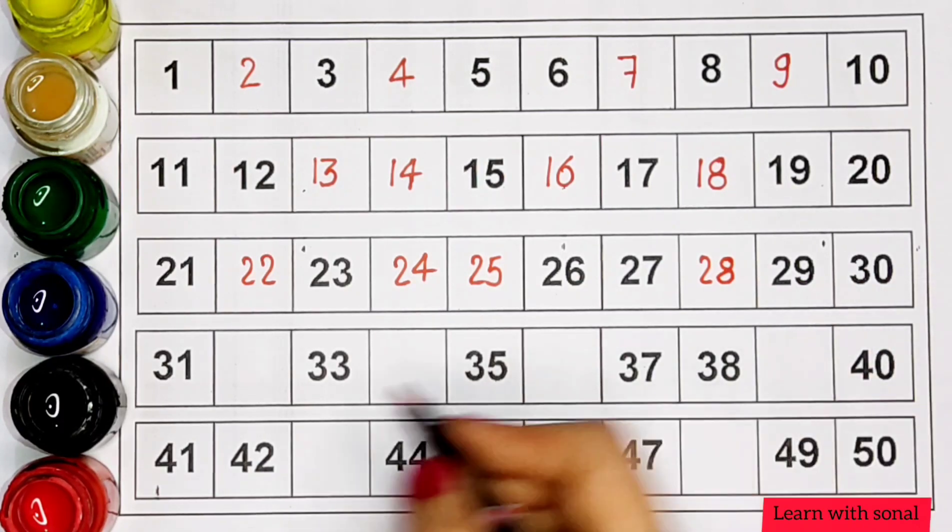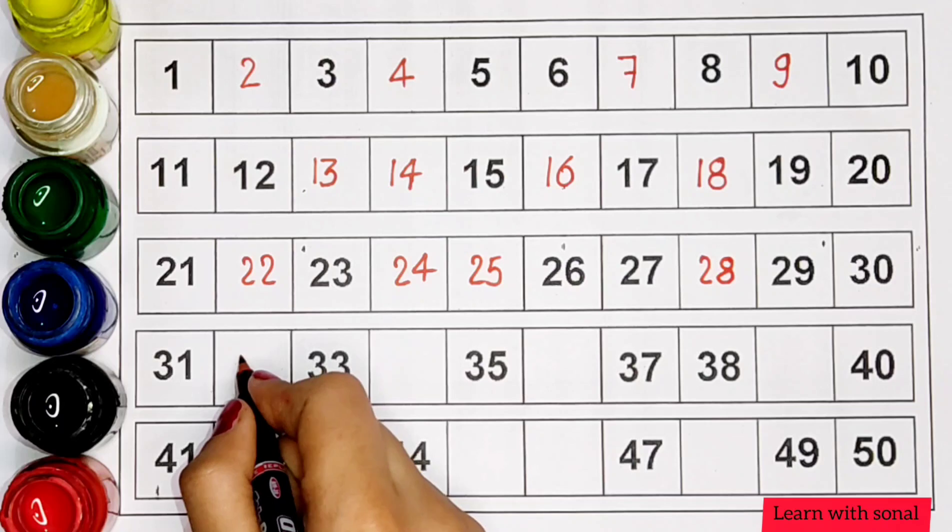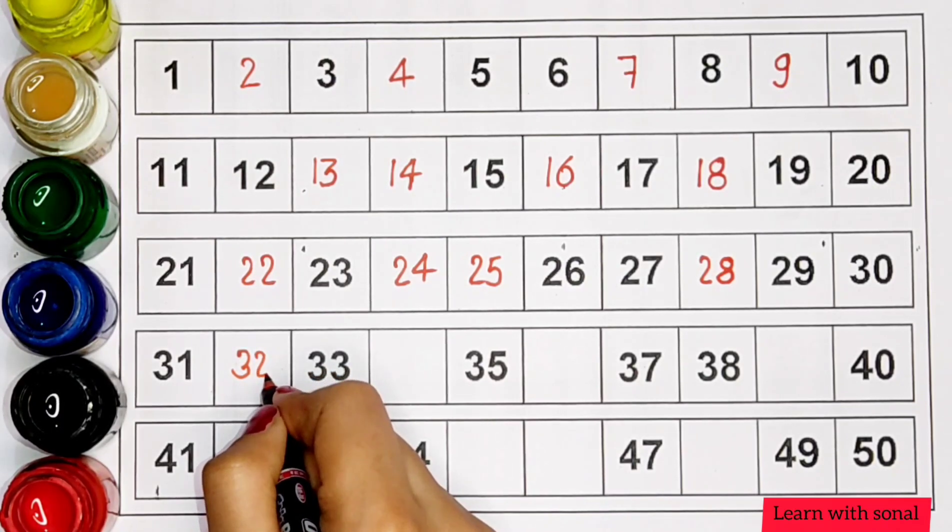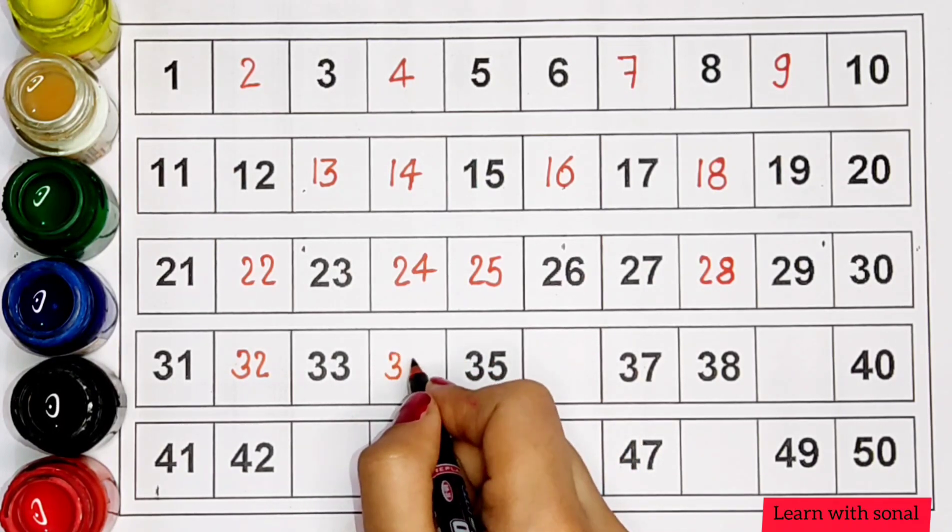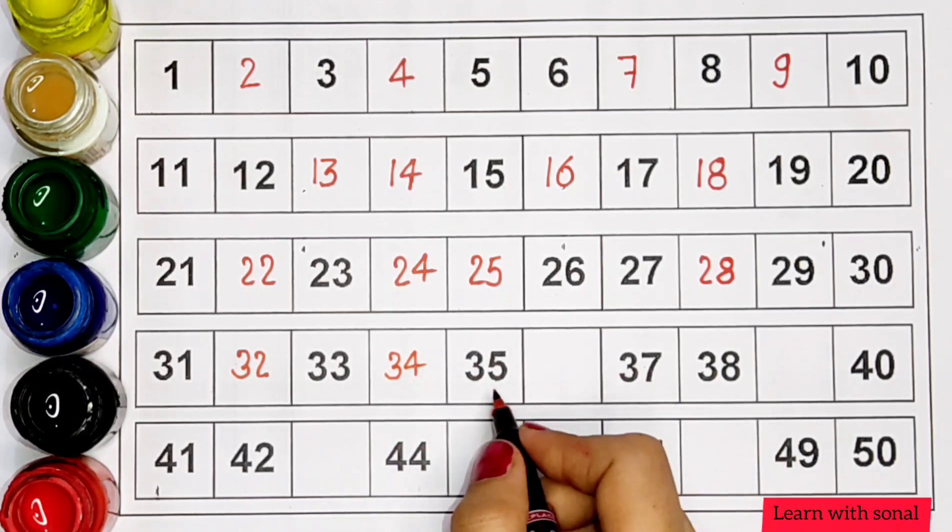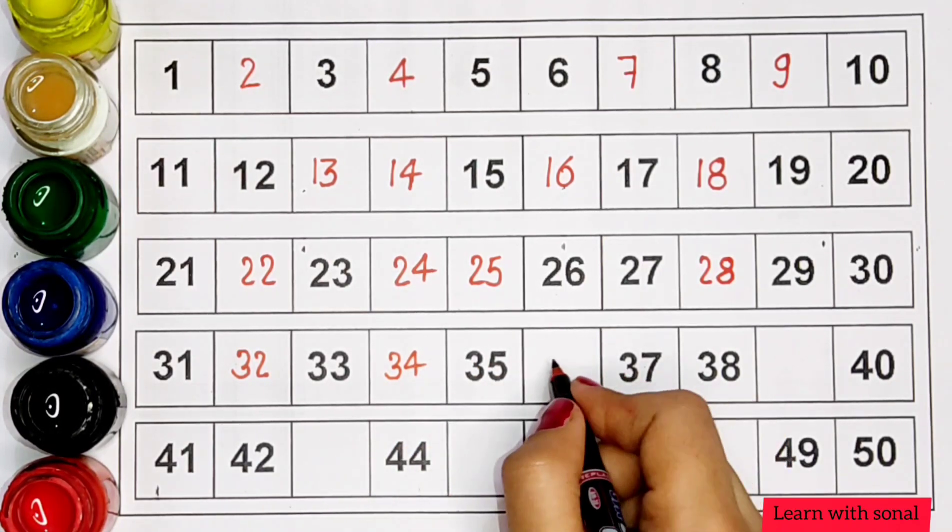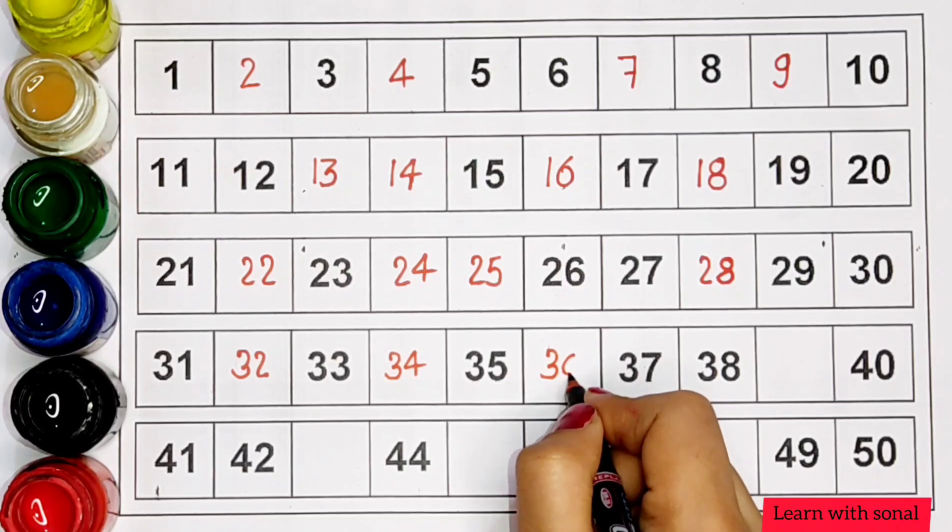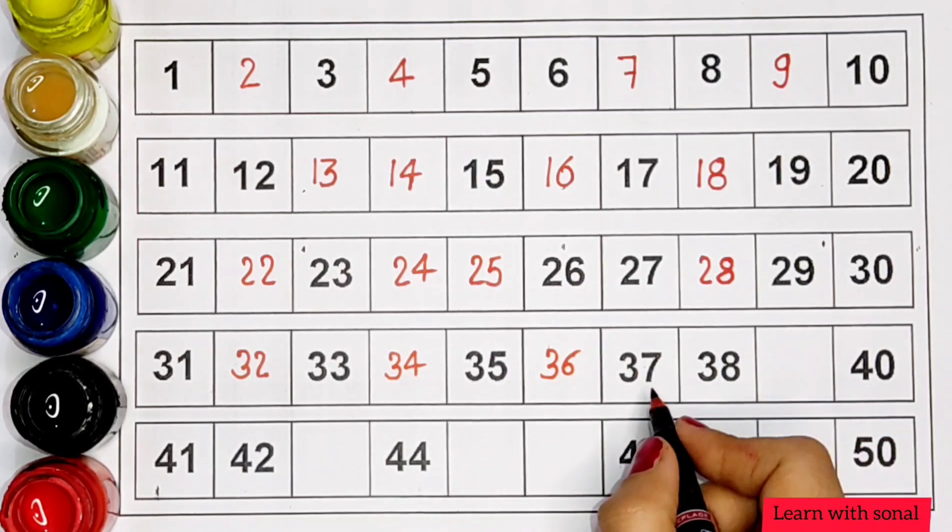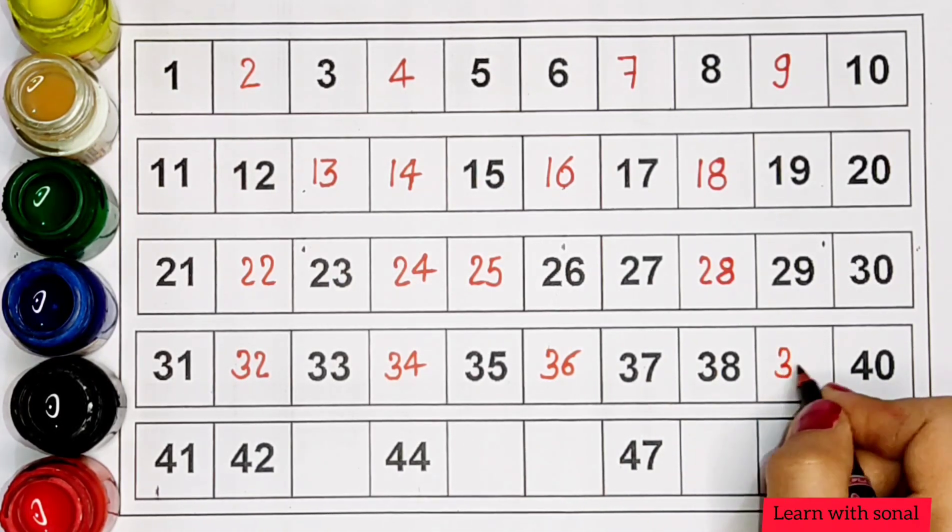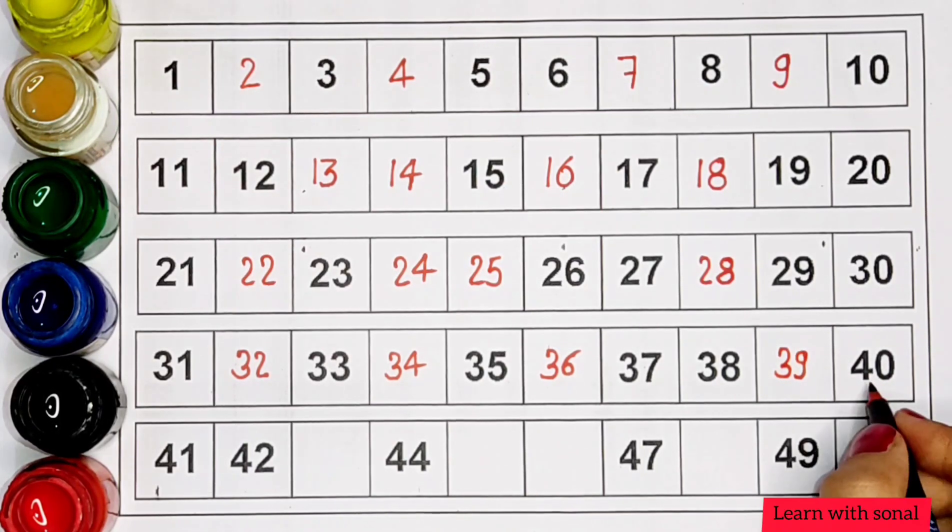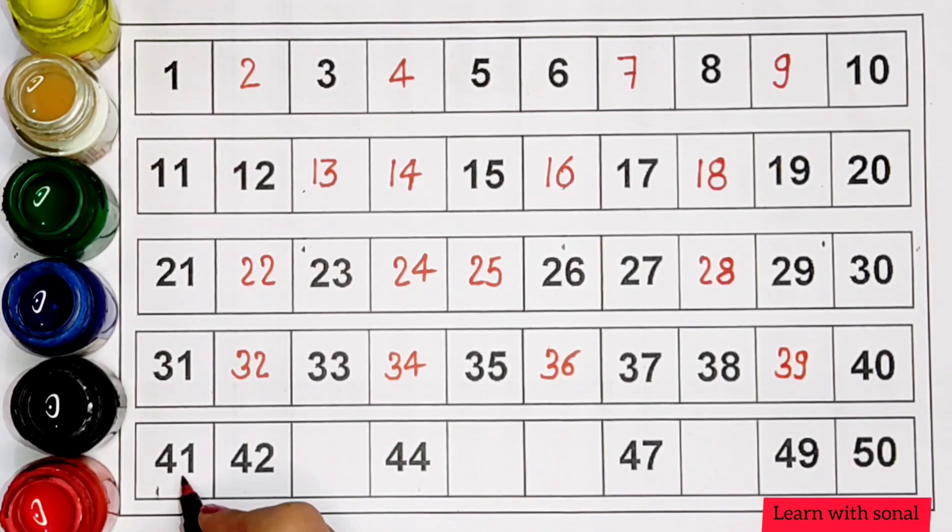Thirty-one, thirty-two, thirty-three, thirty-four, thirty-five, thirty-six, thirty-seven, thirty-eight, thirty-nine, forty, forty-one.